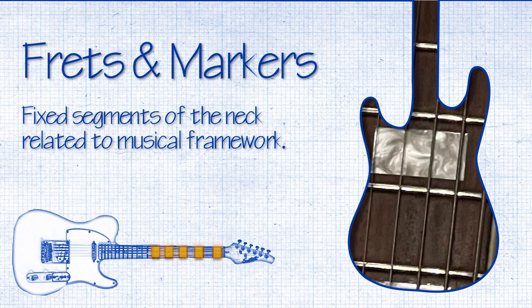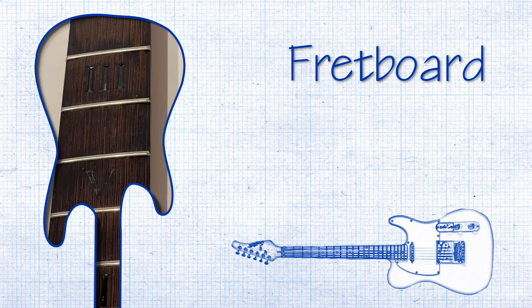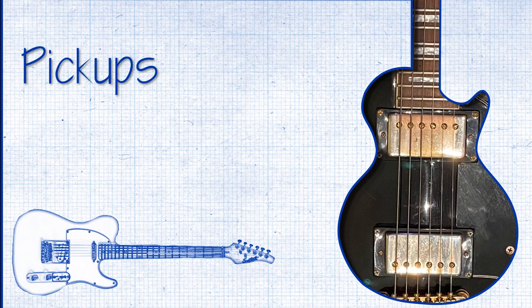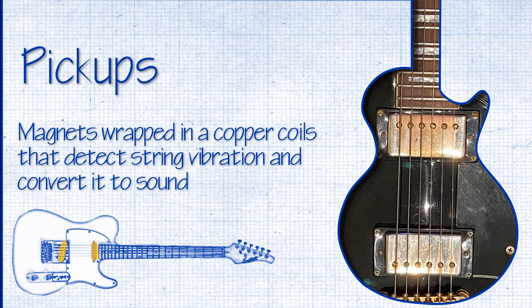The frets are the area between two metal fret wires. The fret markers are used to mark fret location. They are usually placed on frets 1, 3, 5, 7, 9, 12, 15, 17, and 19. The fretboard or fingerboard is the area of wood on the guitar neck where the metal frets are placed.